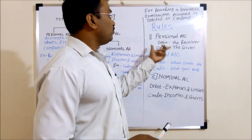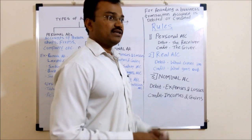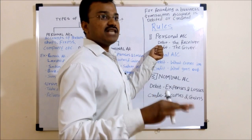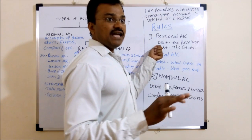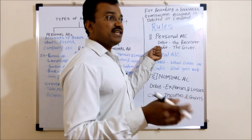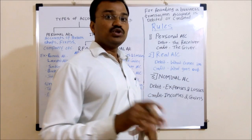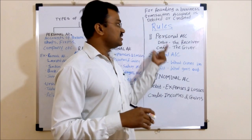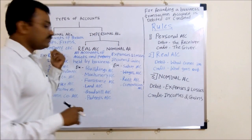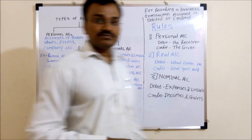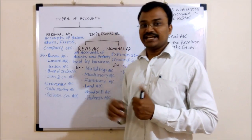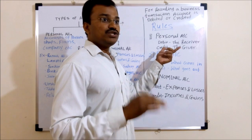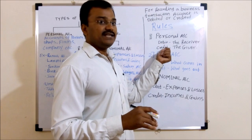First type of account is personal account. The rule for personal account is: debit the receiver, credit the giver. In case of personal account, if the person is the receiver of the benefit, his account should be debited. And if the person is the giver of the benefit, his account should be credited. Person or firm can be the receiver or the giver of the benefit, so you can easily apply this rule.